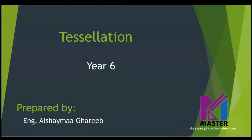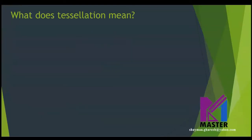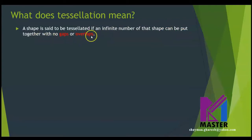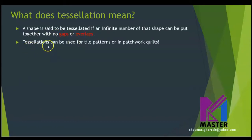Hello, my dear students. This is Ms. Ashayma Harib and today's lesson is about tessellation. Let's start with what does tessellation mean? A shape is said to be tessellated if an infinite number of that shape can be put together with no gaps or overlaps. So these two words are really important for the shape to be tessellated. Tessellations can also be used for tile patterns or in patchwork quilts.